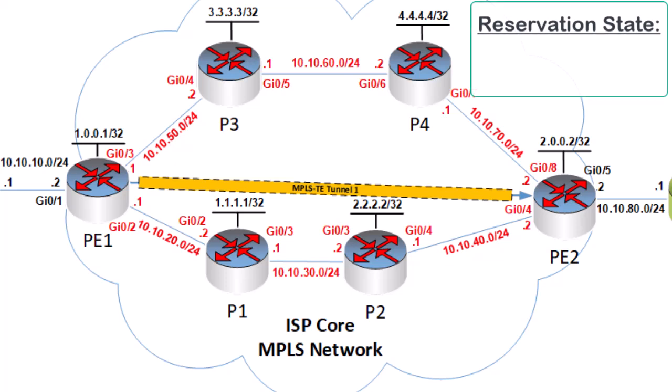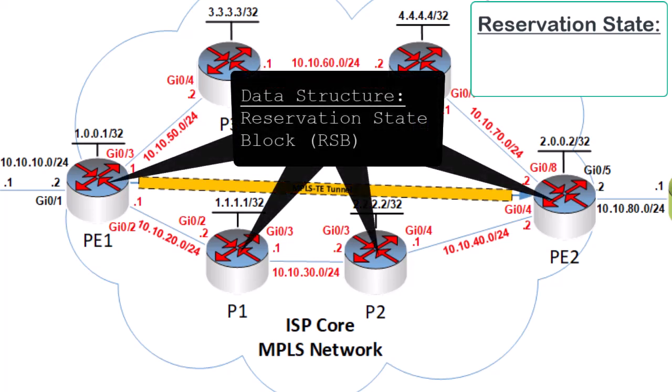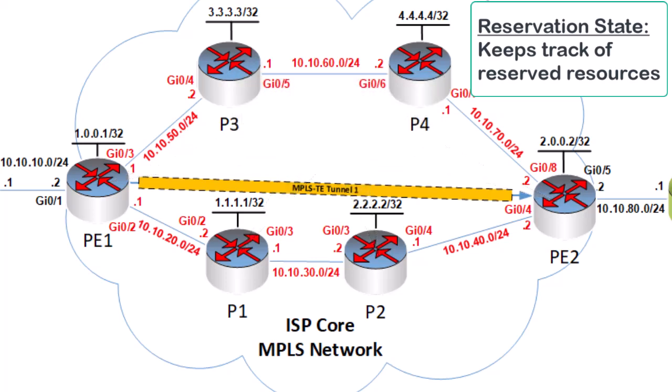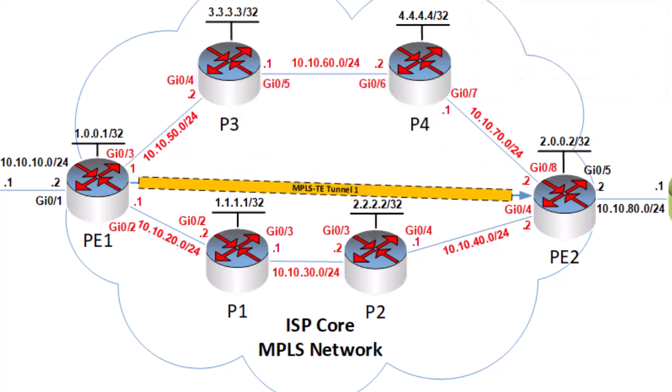The reservation state is another set of information stored within another data structure called the reservation state block, or the RSB. The RSB keeps track of reserved resources for each TE tunnel. For each interface configured with RSVP, a resource reservation state is contained within the RSB. Now the PSB and the RSB are populated using information obtained from two specific RSVP messages.